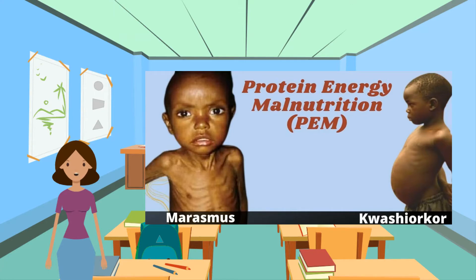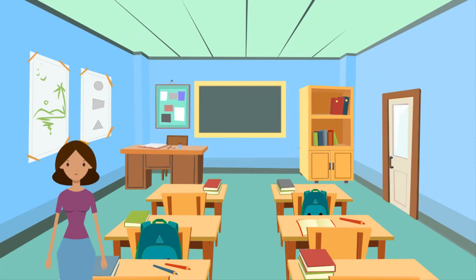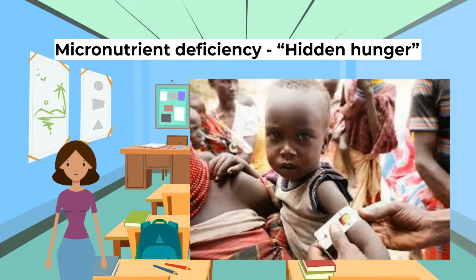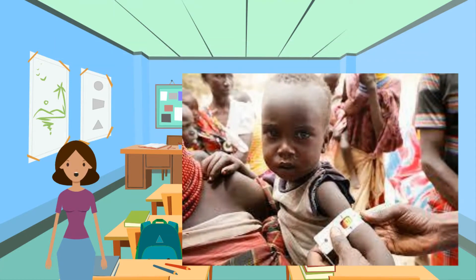It can also lead to marasmus, which leads to emaciation. Now, micronutrient deficiency or hidden hunger: a lack of iron can lead to tiredness and lethargy; a lack of vitamin A can lead to a weakened immune system; a lack of iodine can cause swelling of the thyroid gland and damage to the brain; and a lack of zinc can lead to growth and immunity failure.